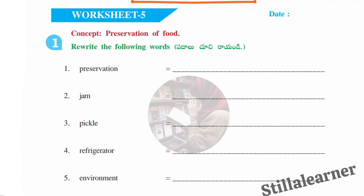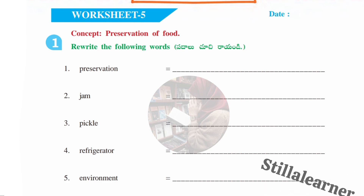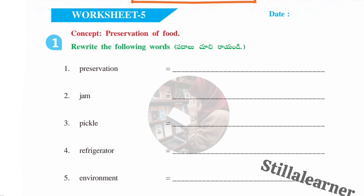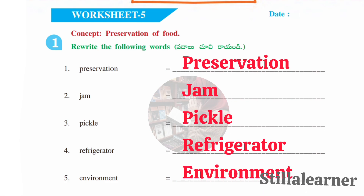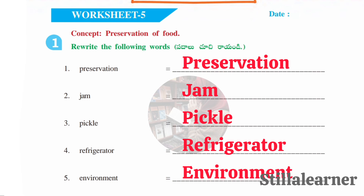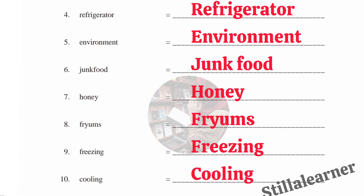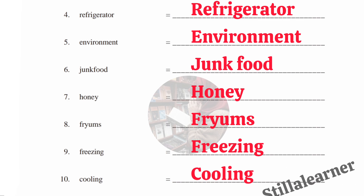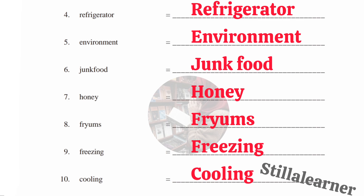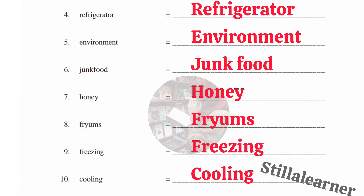Now we'll move to Worksheet 5 — the concept is 'Preservation of Food.' The ten words to rewrite and learn the spellings of are: preservation, jam, pickle, refrigerator, environment, junk food, honey, fryams, freezing, and cooling.